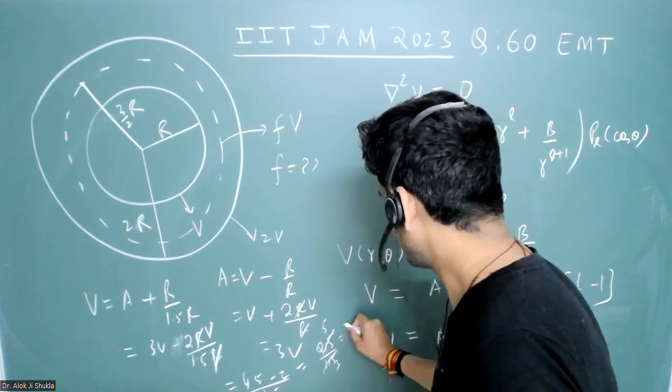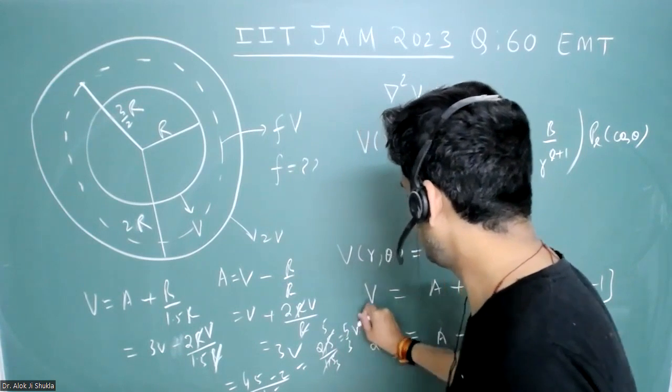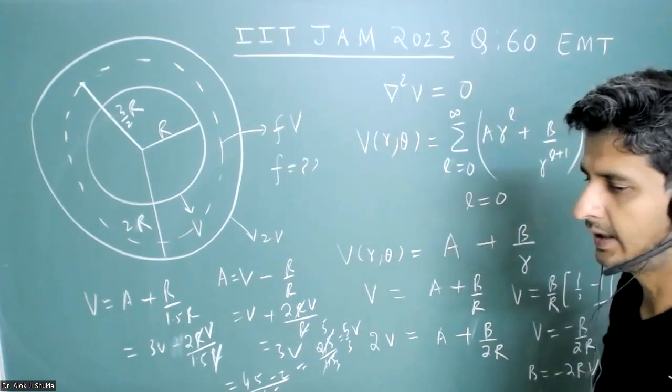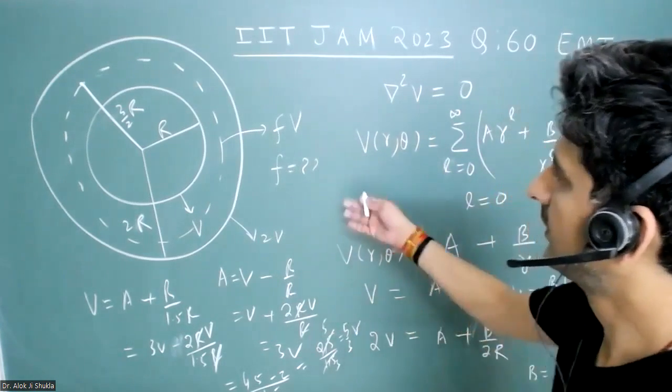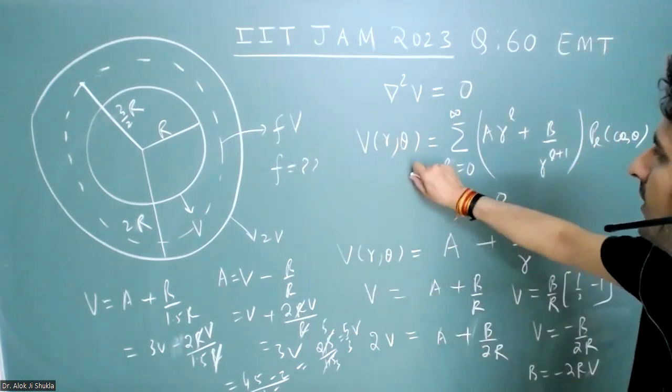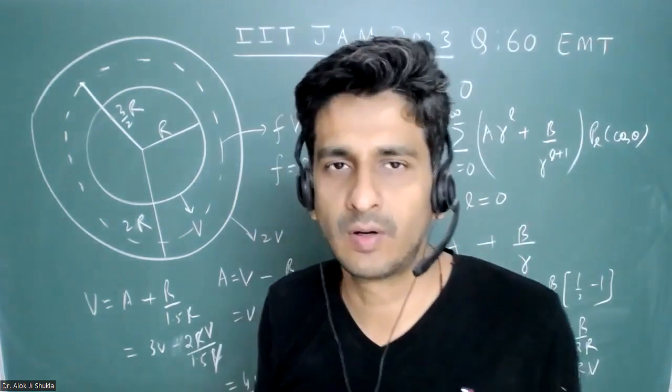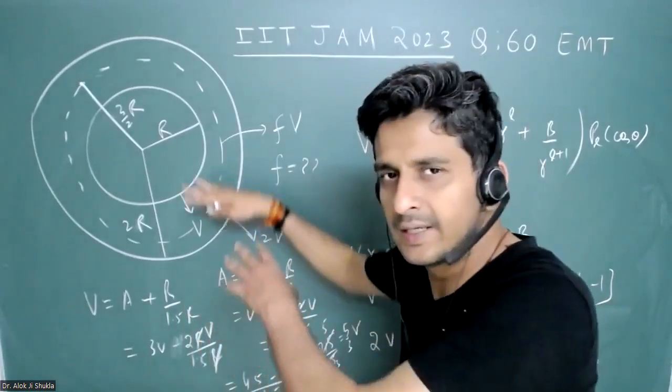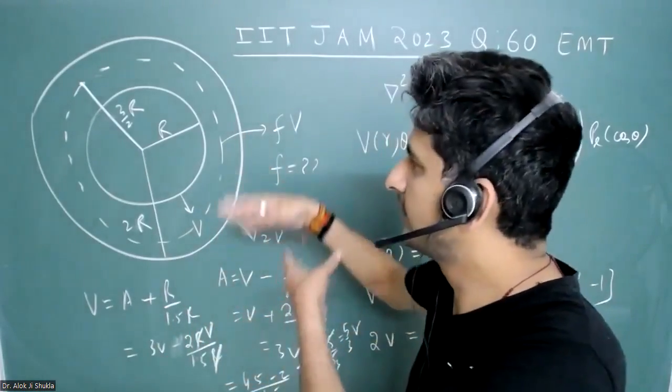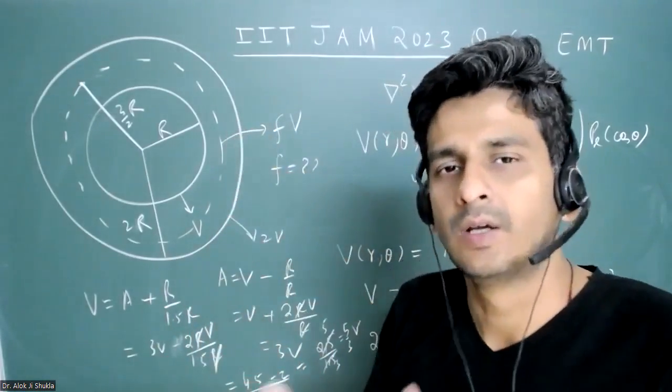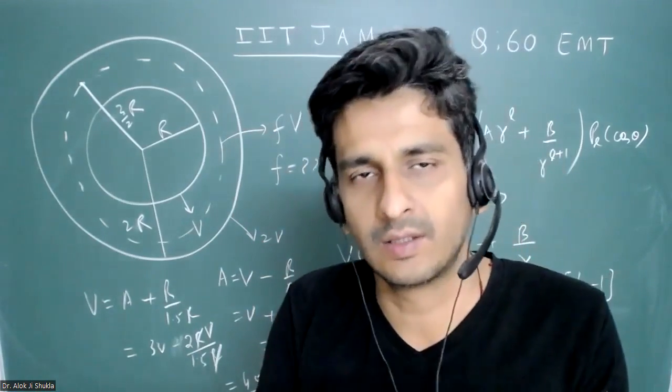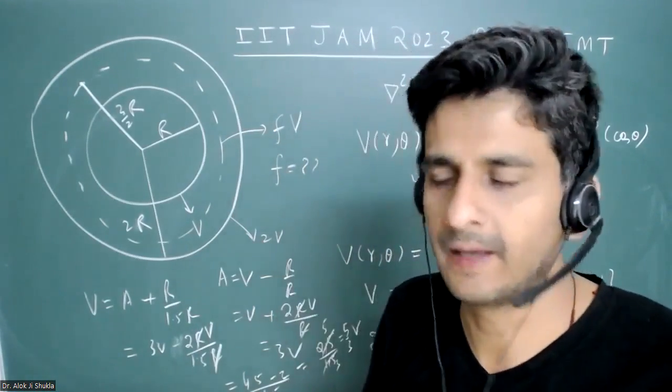So it is 5/3v. Now you can divide it and get the value. So you understand this power of Laplace equation and knowing the solution in the spherical polar coordinate. Whenever some condition is given that this is having potential v, this is having potential 2v, you have to apply Laplace equation. Thank you.